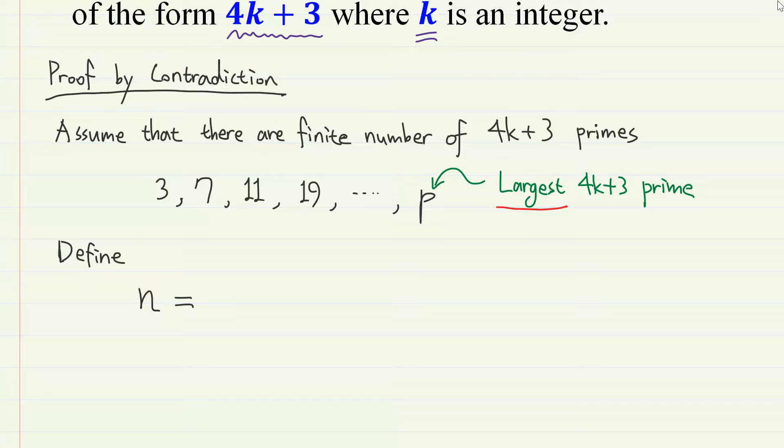Now define n as 4 times 7 times 11 times 19 times, so on, all the way up to p, then plus 3. Notice that the product in the parenthesis starts from 7, not 3. The reason why I didn't include 3 here will be clear later on.